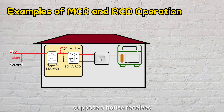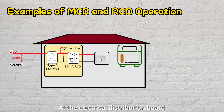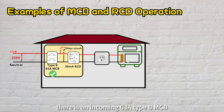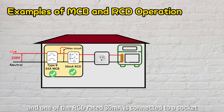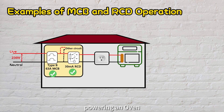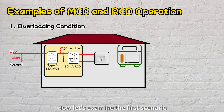Imagine this. Suppose a house receives a single-phase supply of 230 volts. At the electrical distribution board, there is an incoming 63 amps Type-B MCB, and one RCD rated 30 milliamps is connected to a socket powering an oven. Now, let's examine the first scenario: an overloading condition.